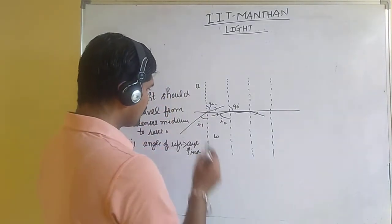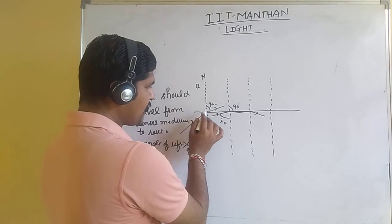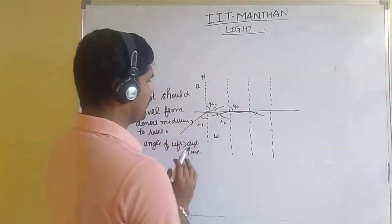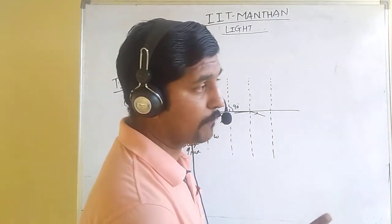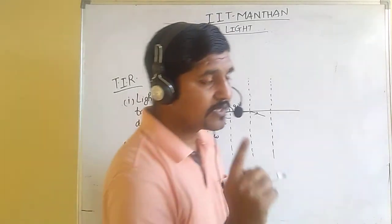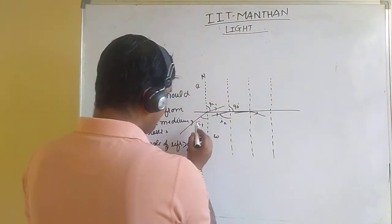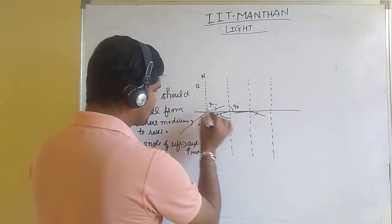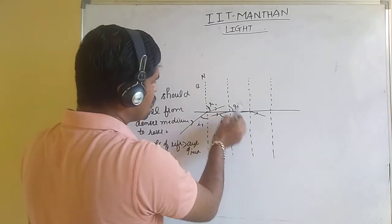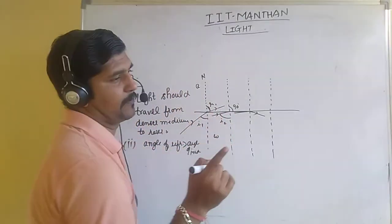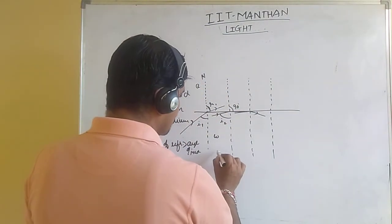Here we have the incident ray and the normal. The second condition is that the angle of incidence should be greater than the critical angle. For a given angle of incidence, the refracted ray bends further away. If the angle of refraction becomes 90 degrees, that is what we call the critical angle.